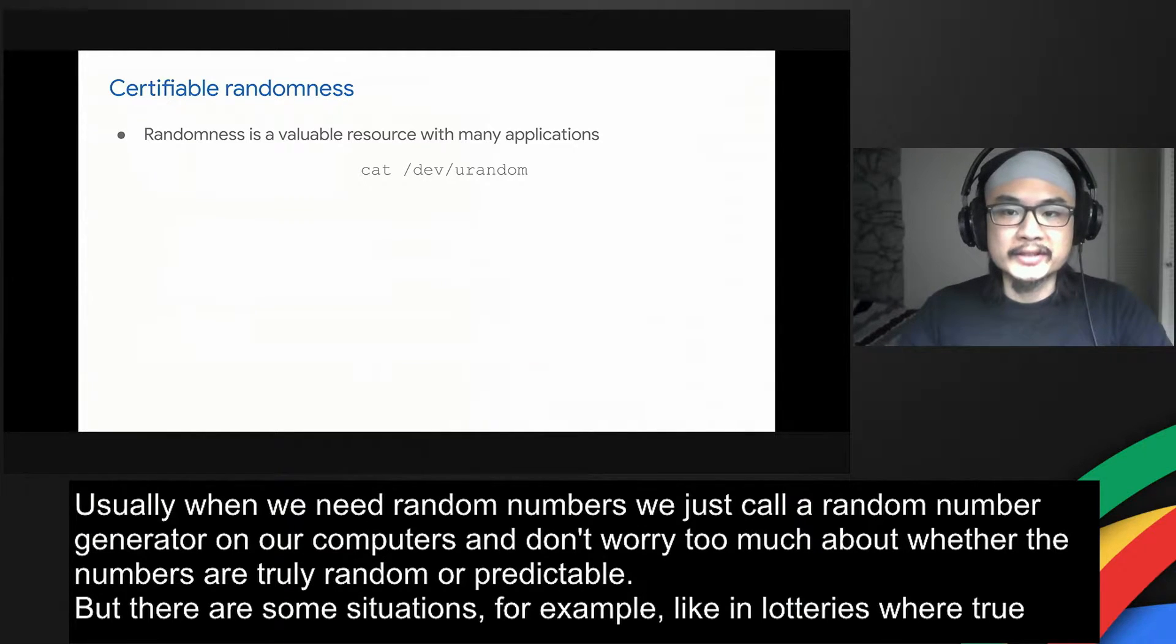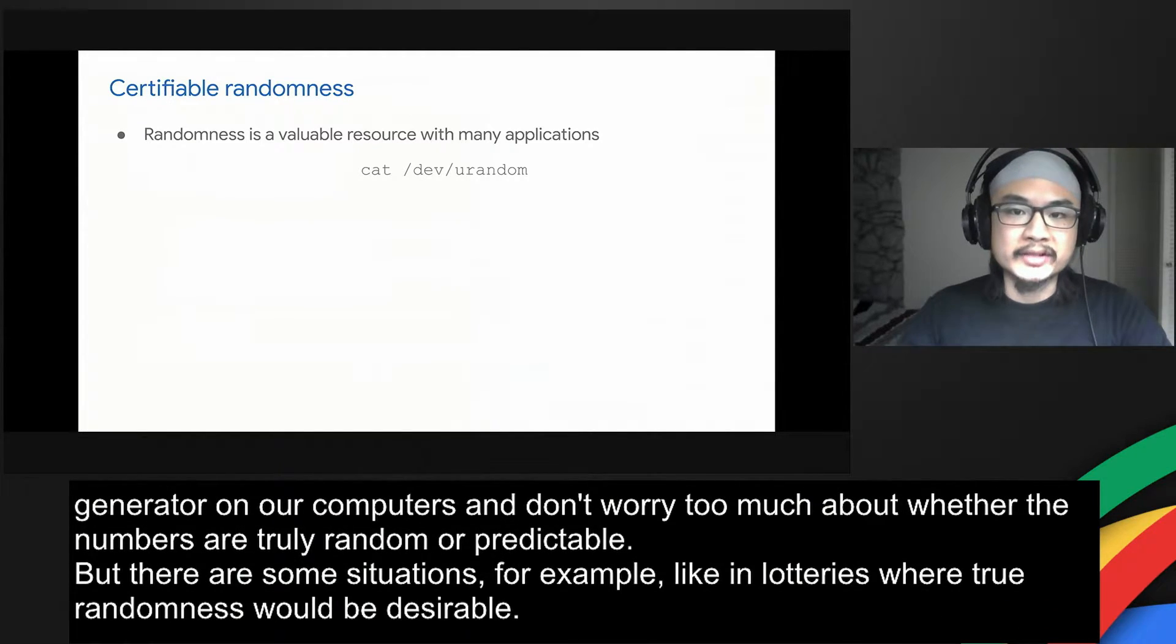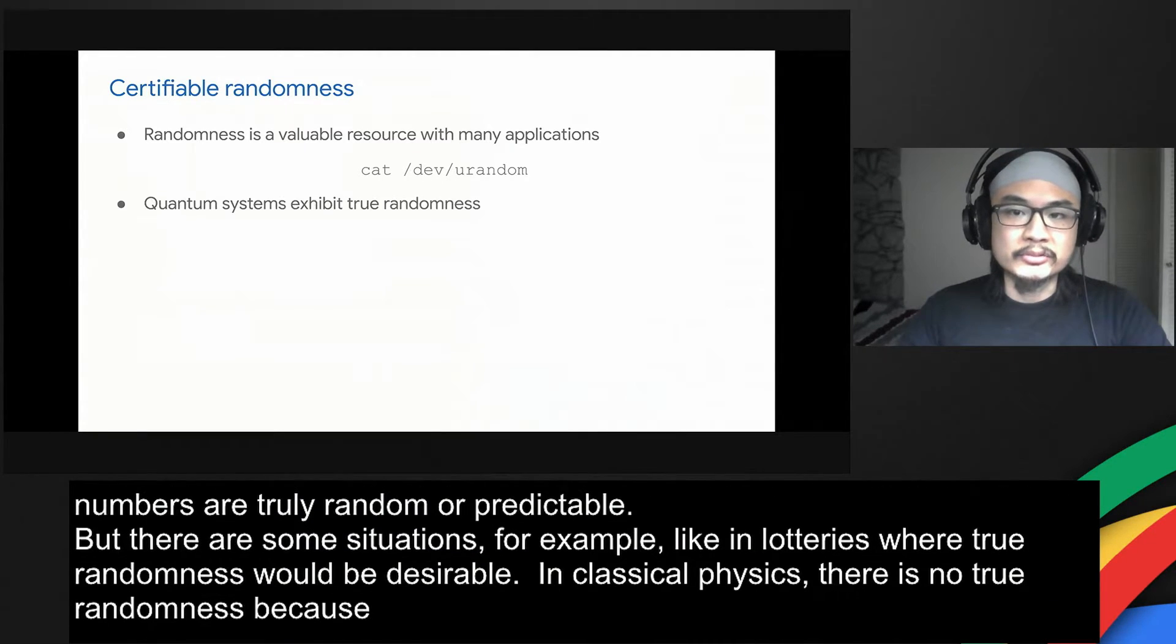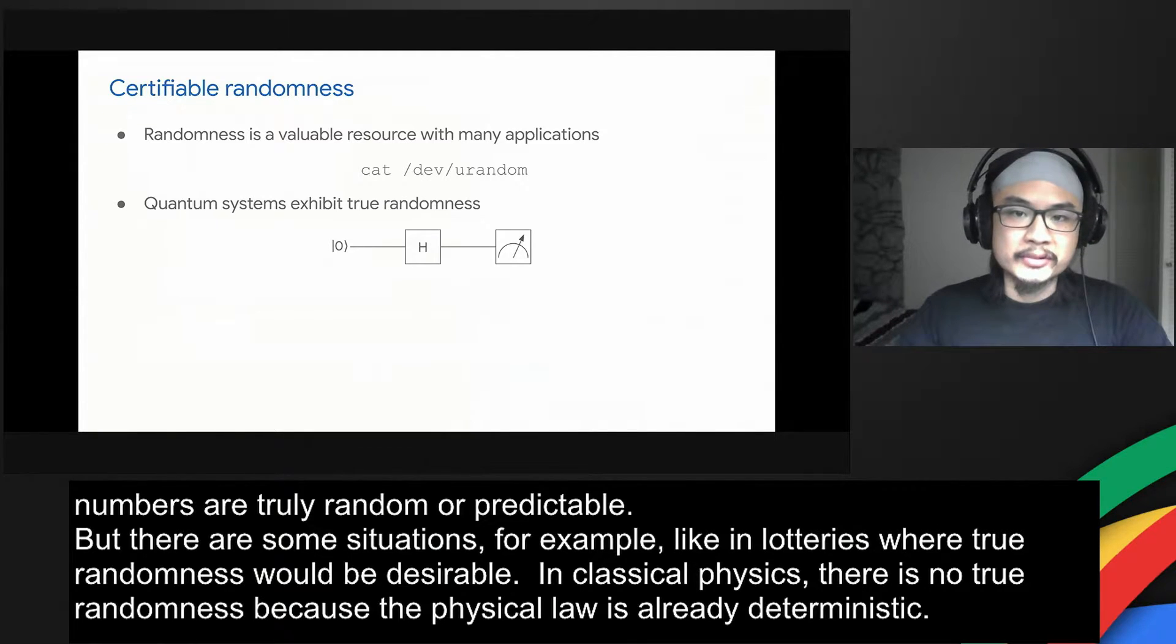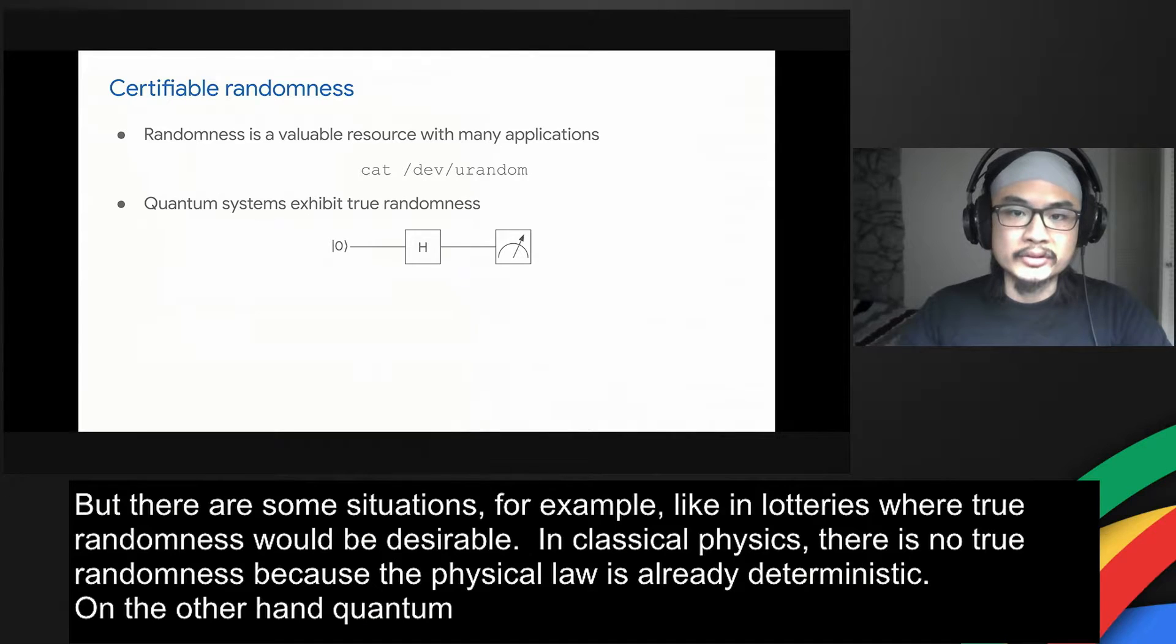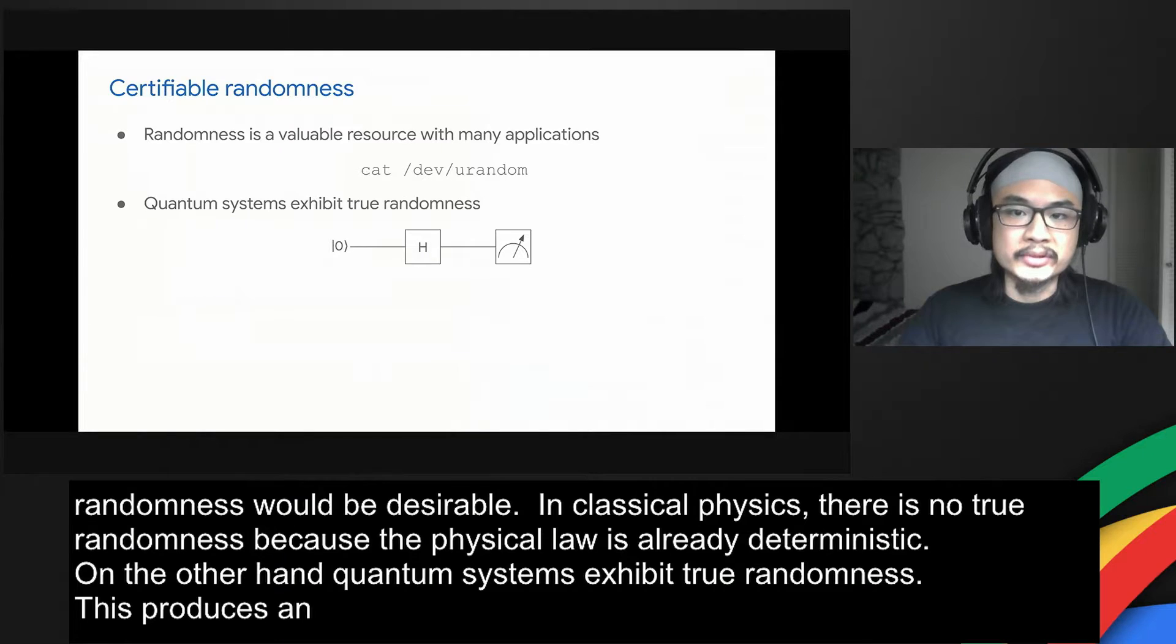In classical physics there is no true randomness because the physical laws are deterministic. On the other hand, quantum systems exhibit true randomness. Here is a quantum circuit which, if executed correctly, produces an unbiased coin flip. The outcome of this experiment cannot be predicted with certainty even in principle.